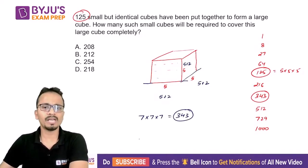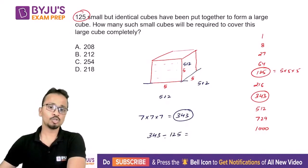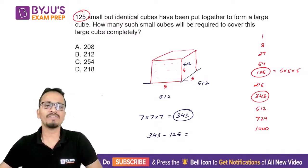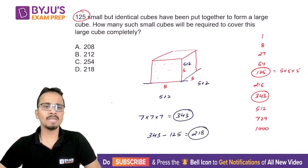The number of extra small cubes required will be 343 minus the original number of cubes which is 125. So if we solve it, 343 minus 125, the final answer will be 218.